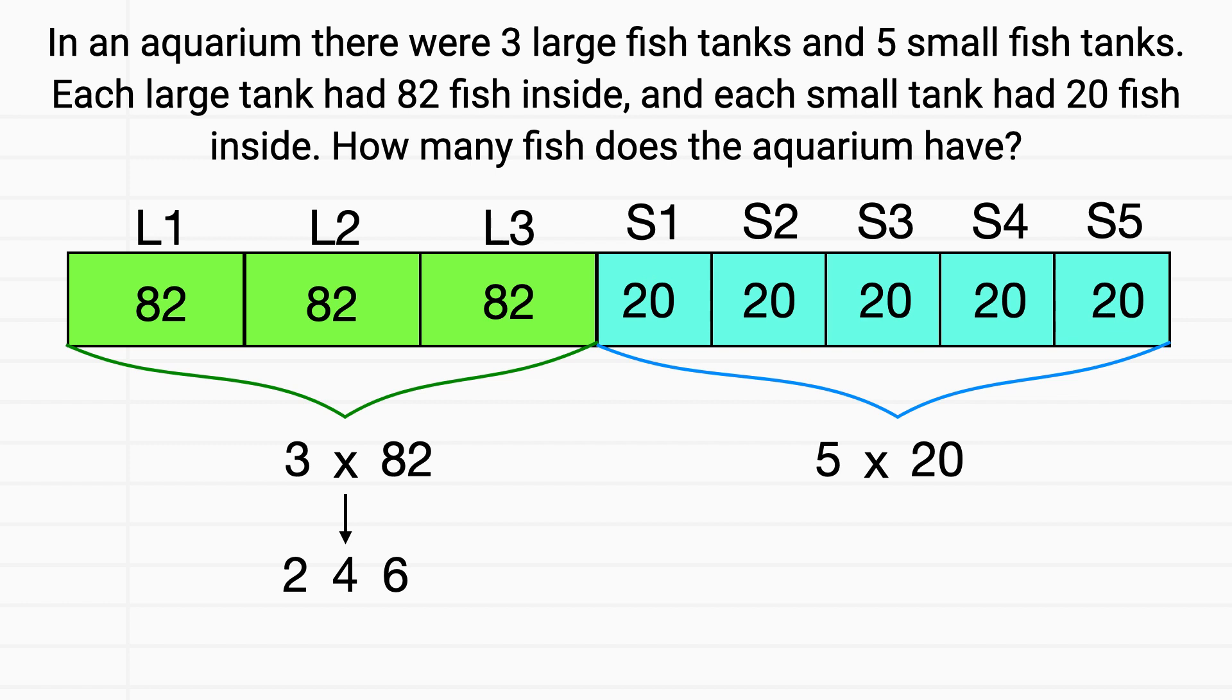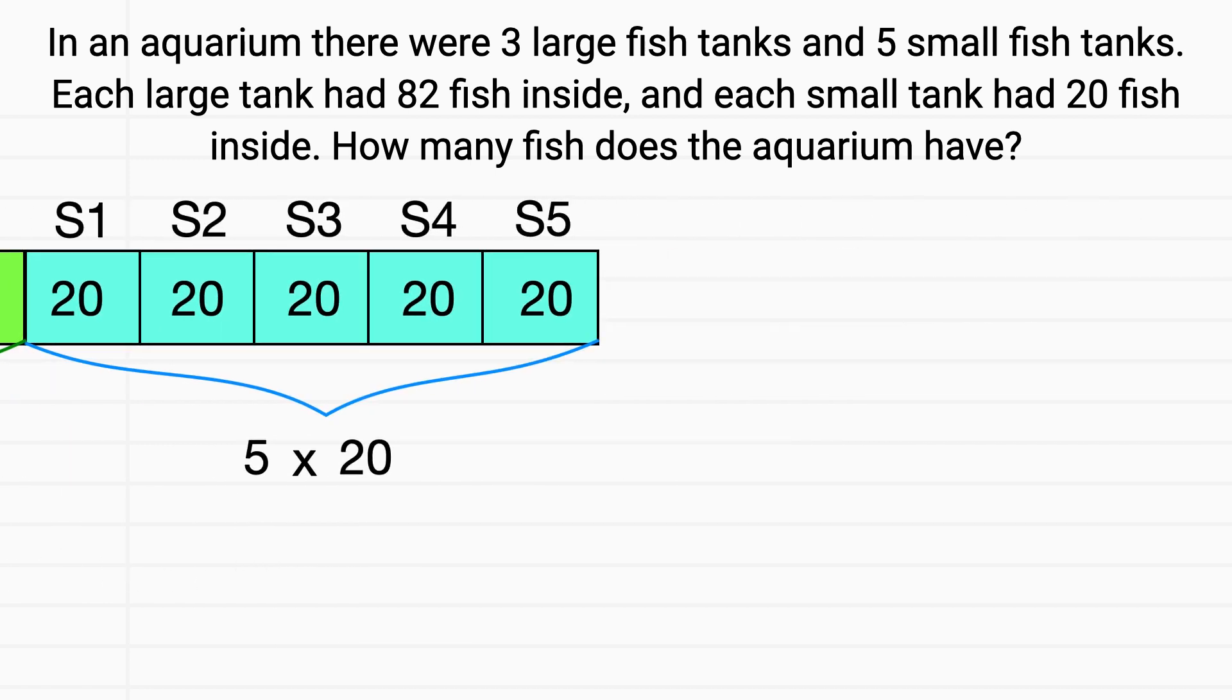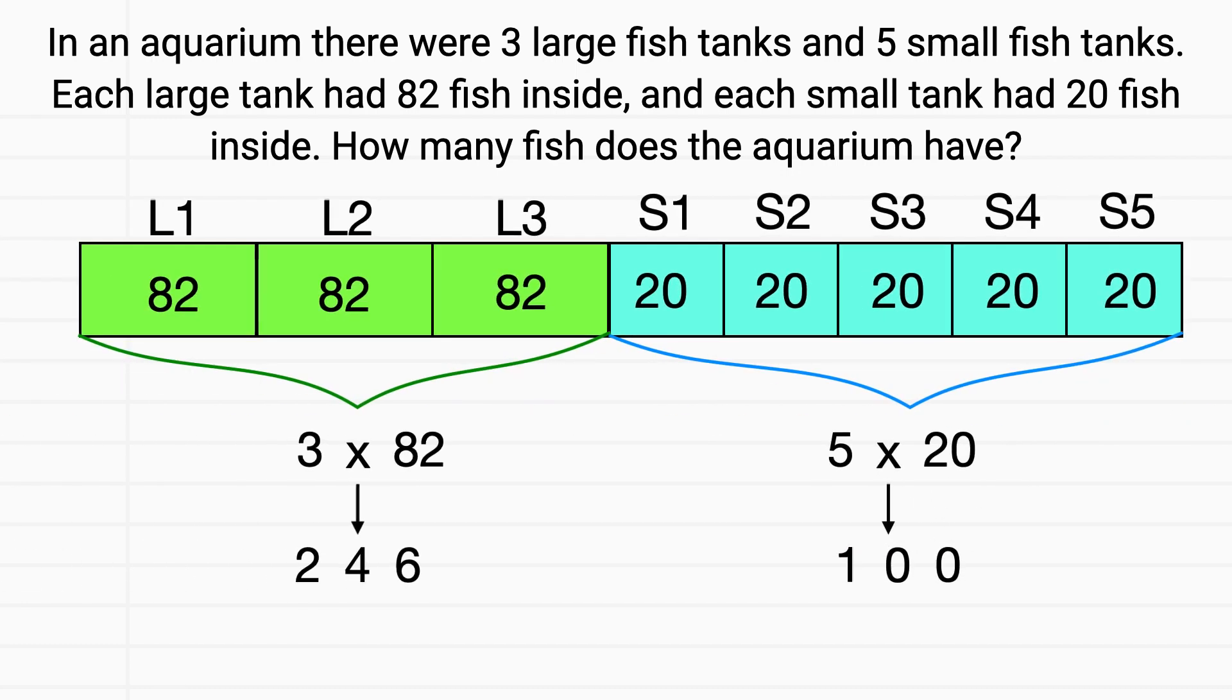Now let's focus on the small tanks. What does 5 times 20 equal? When you multiply 20 times 5, you get that 5 times 0 is 0, but 5 times 2 is 10. So 5 times 20 is 100.